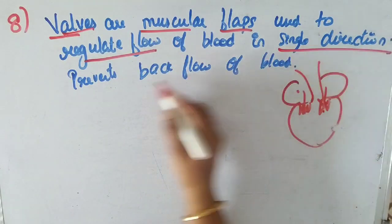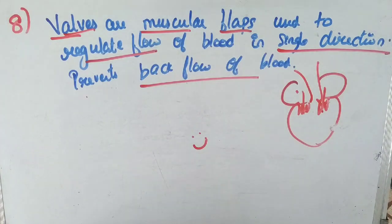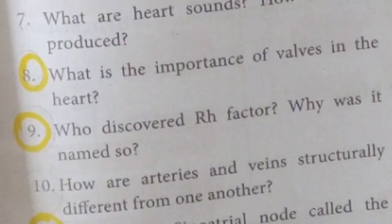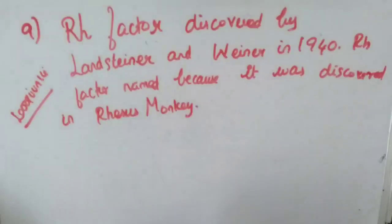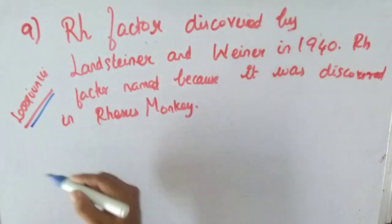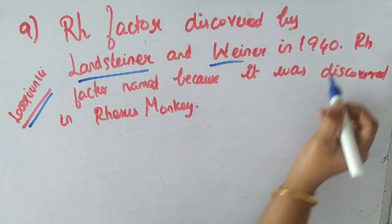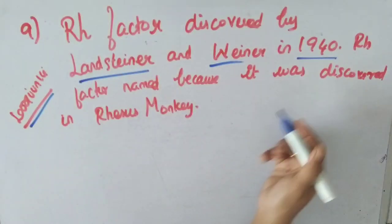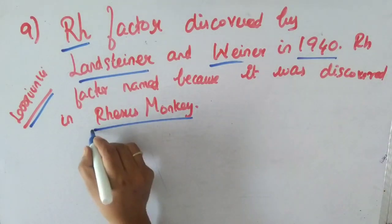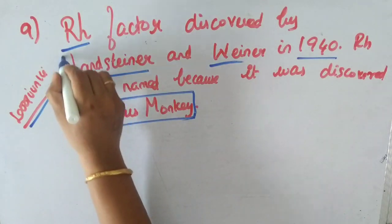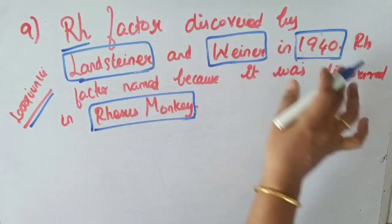Question 9: Who discovered the RH factor and why is it named so? The RH factor was discovered by Landsteiner and Wiener in 1940. It is named the RH factor because it was first identified in Rhesus monkeys.